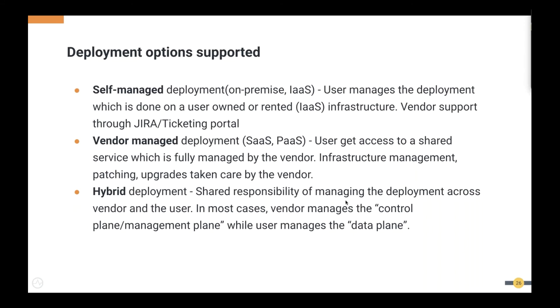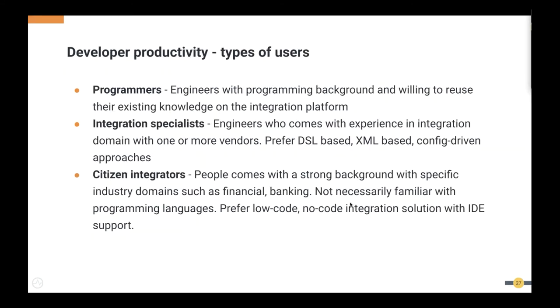The third option is hybrid deployment, where certain components are managed by the user while others are managed by the vendor. The division of responsibilities is typically called data plane and control plane. The data plane — where actual traffic and data flows through — is usually controlled by the user, while the control or management plane is managed by the vendor. When selecting a vendor, you need to decide based on your team's capabilities whether to manage deployment yourself, go vendor-managed, or go with a hybrid model.